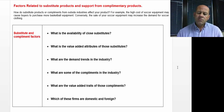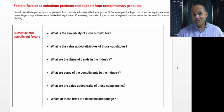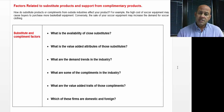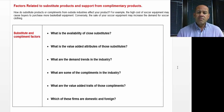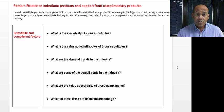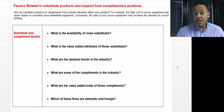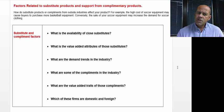Sometimes those substitutes aren't your direct product but some other product. In a food market, it may be buying chicken over beef. It may be opting for one technology over another. It might be opting for a very simple technology over a very high-tech, costly one. But it's very important to know what those substitutes are.